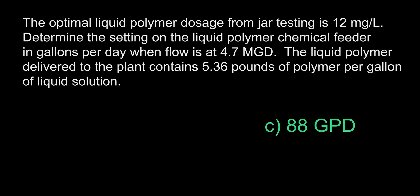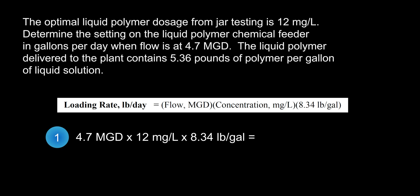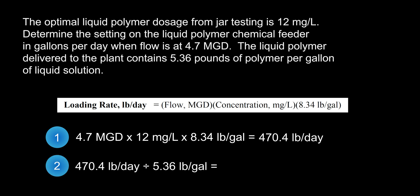The answer is C, 88 gallons per day. This question can be broken down into two parts. For the first part, we use the loading rate formula, which tells us how many pounds of polymer are required daily at the given flow and optimal dosage. For the second part, we solve by taking our previous answer and dividing it by pounds per gallon of polymer liquid solution — 470.4 pounds per day divided by 5.36 pounds per gallon — which equals 88 gallons per day of polymer, or C, our final answer.